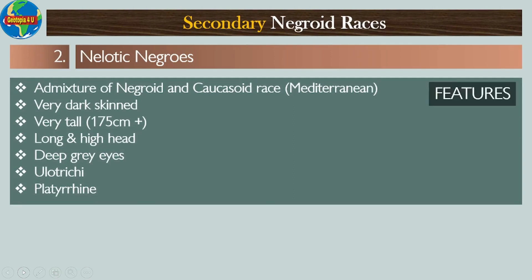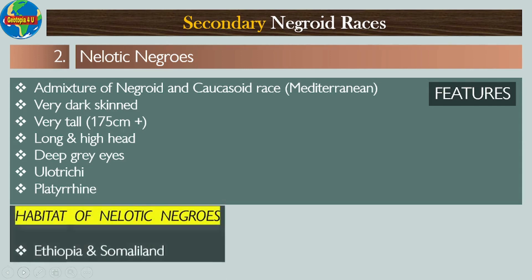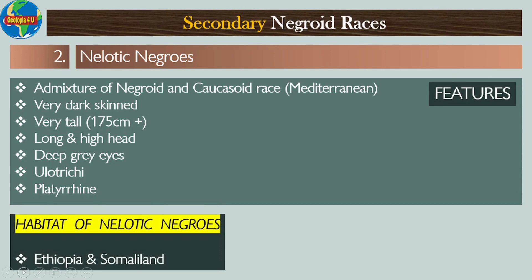Number two: Nilotic Negros. Their features include: they are an admixture of Negroid and Caucasoid race; they are very dark-skinned; they are very tall, approximately 175 centimeters; they have a long and high head; they have deep gray eyes; they have ulotrichous hair; and they are platyrrhine. The habitat of Nilotic Negros includes Ethiopia, Somaliland, and Eastern Sudan.